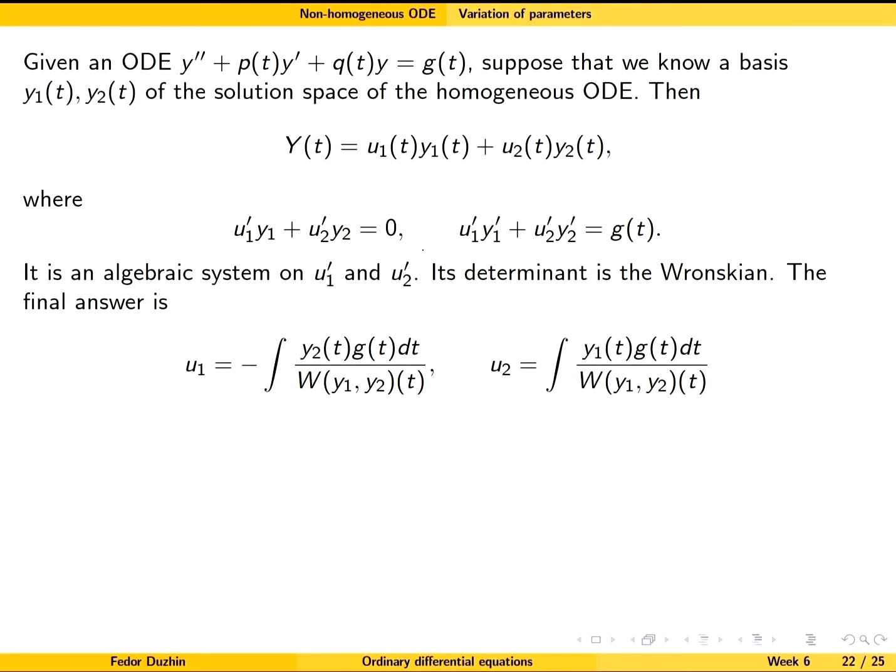When you do this in practice, you don't really have to go through all the steps again. You can just use the final answer. You write that the particular solution of the non-homogeneous equation is in this form, where u₁ and u₂ are given by these two formulae.